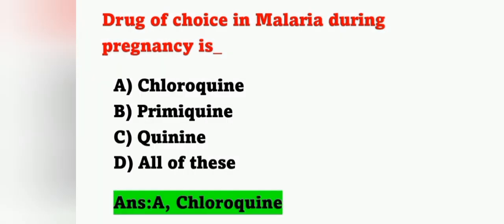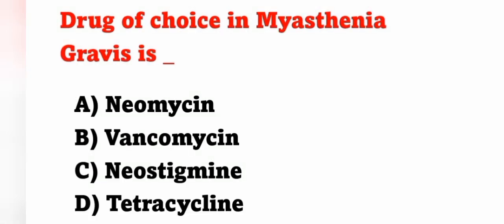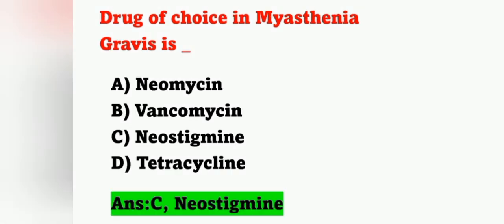Next question: drug of choice in myasthenia gravis is — option A: neomycin, option B: vancomycin, option C: neostigmine, option D: tetracycline. Drug of choice in myasthenia gravis is neostigmine, option C is the correct answer.